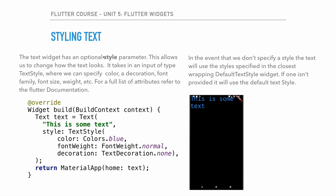The Text widget has an optional style parameter that allows us to change how the text looks. It takes an input of type TextStyle. The TextStyle class lets us specify color, decoration, font family, font size, font weight, and more. For the full list refer to the Flutter documentation. Here's a simple example: Text('This is some text', style: TextStyle(...))